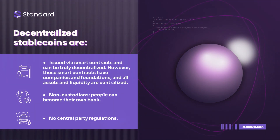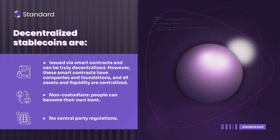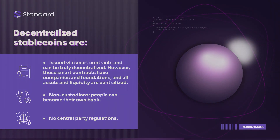Decentralized stablecoins are issued via smart contracts and can be truly decentralized. However, these smart contracts have companies and foundations behind them, and all assets and liquidity are centralized. Non-custodial solutions allow people to become their own bank, with no central party regulations.